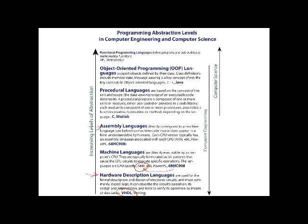Then we have what are known as procedural languages. In the department, we use C and MATLAB. C can be known as a portable assembly language, and MATLAB is a higher-level scripting language that's great for plotting and digital signal processing. As you go up the abstraction, that's where computer science comes in — they typically teach their intro programming language, which is now Java, an object-oriented programming language. Our department, which is computer engineering, tends to focus on all these lower-level languages.